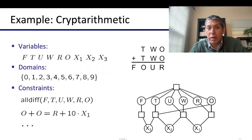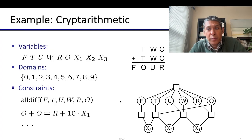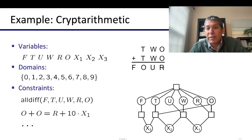In a simple constraint graph with variables only, constraints are binary — involving only two variables. But some CSPs have more general constraints. Take a cryptarithmetic problem, like TWO plus TWO equals FOUR, where T, W, O, etc. stand for distinct digits. For example, O plus O equals R plus 10 times X1 — if O were 7 and R were 4, then 7 plus 7 equals 4 plus 10, giving a carry of 1.